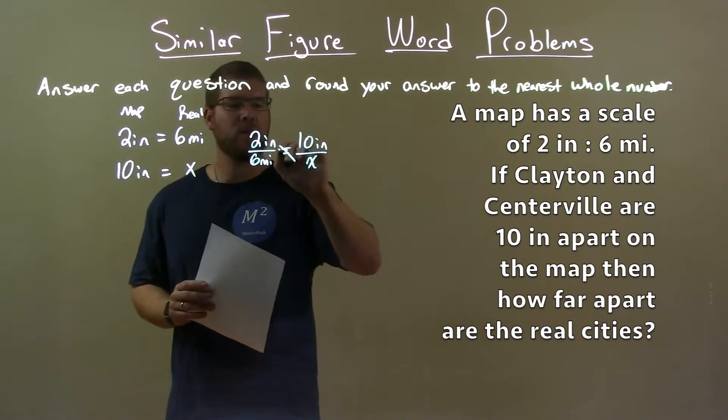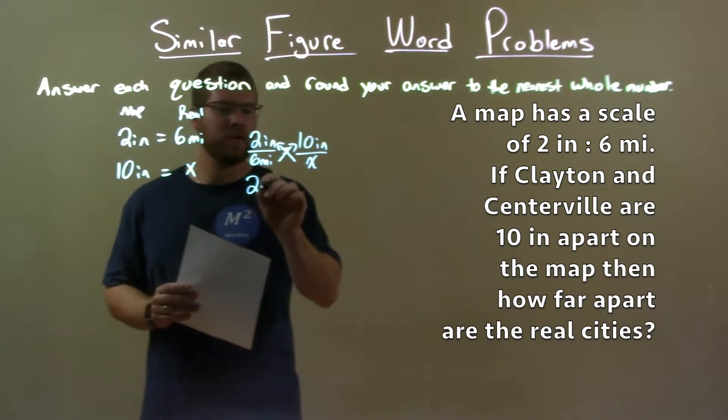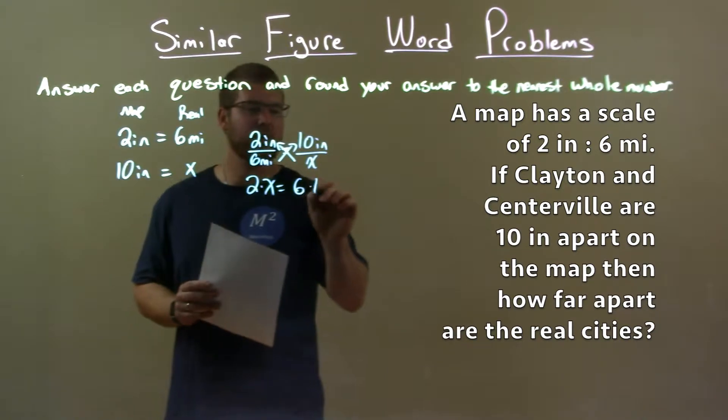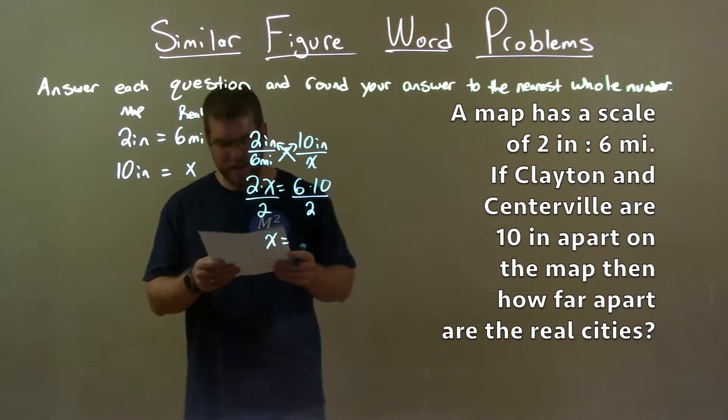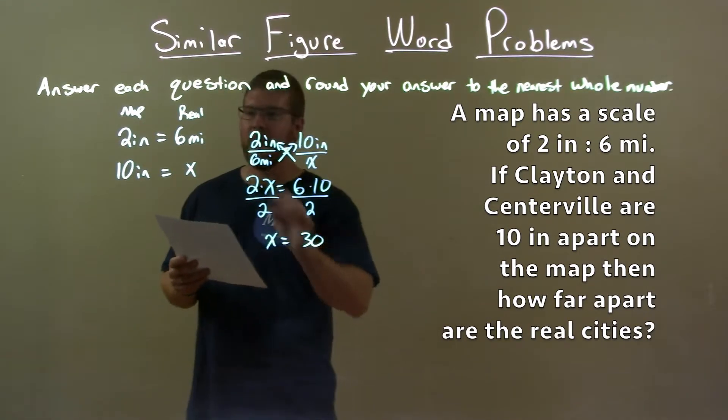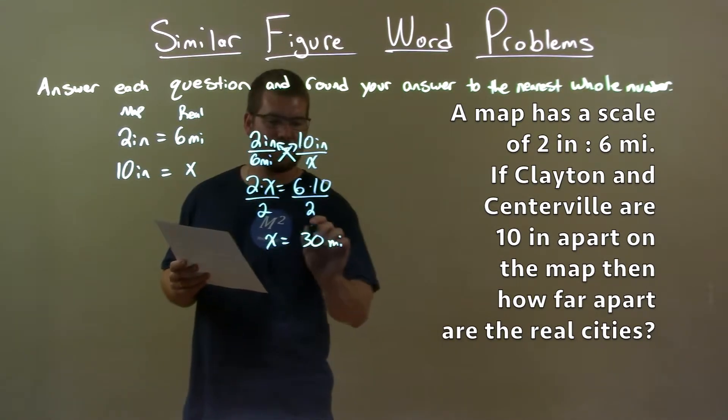Let's solve for X. Cross multiply here. 2 times X equals 6 times 10. Divide both sides by 2. X is by itself and 6 times 10 divided by 2 is 30. That unit is miles.